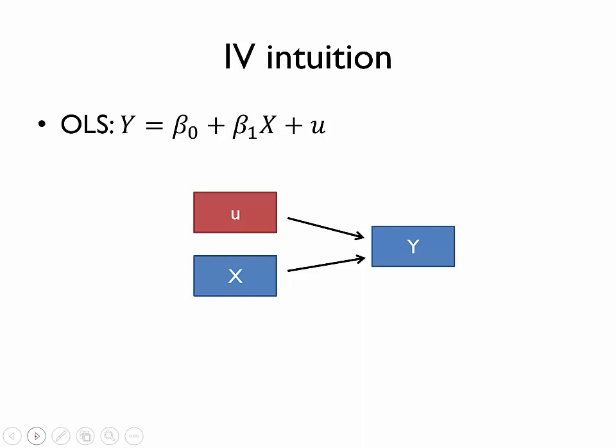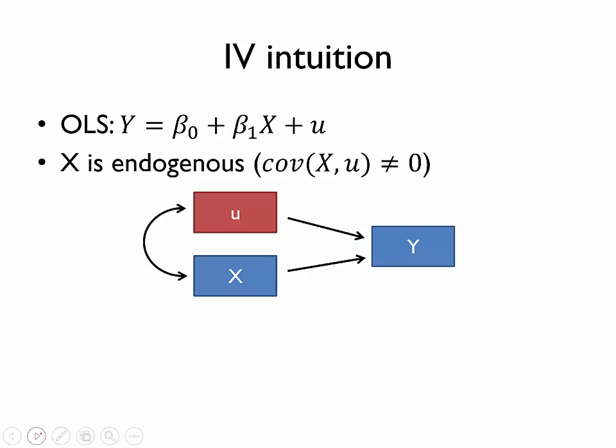When we estimate an OLS model, we are trying to find the causal effect of x on y — in other words, we're trying to find this relationship. One problem we run into is that if x is an endogenous variable, then that means it's related to the error term.